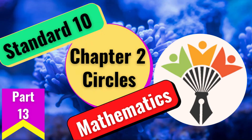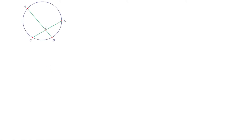Welcome to Maths Companion. Let us record what we have learned in the last video. If two chords AB and CD intersect within the circle at P, then PA into PB equal to PC into PD.